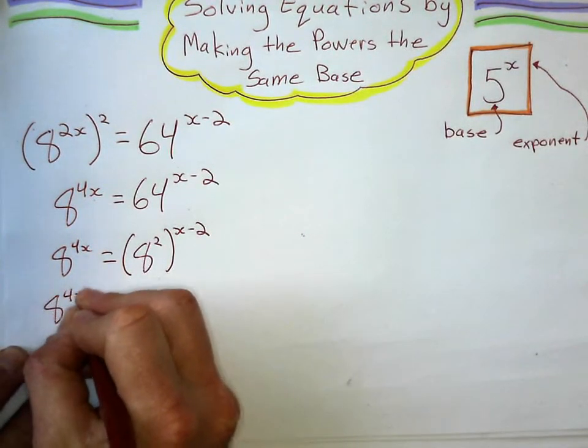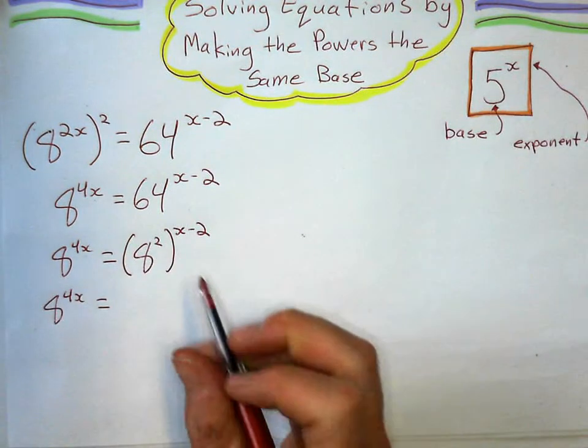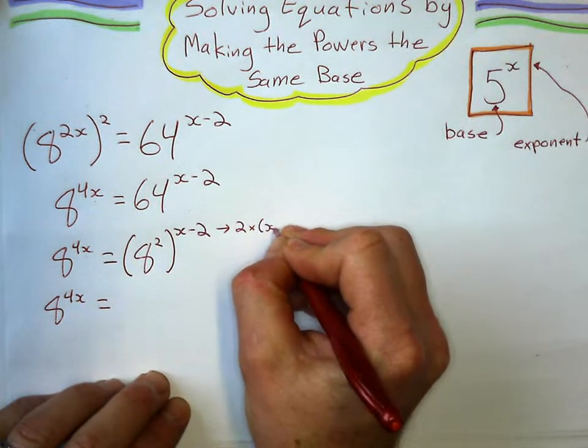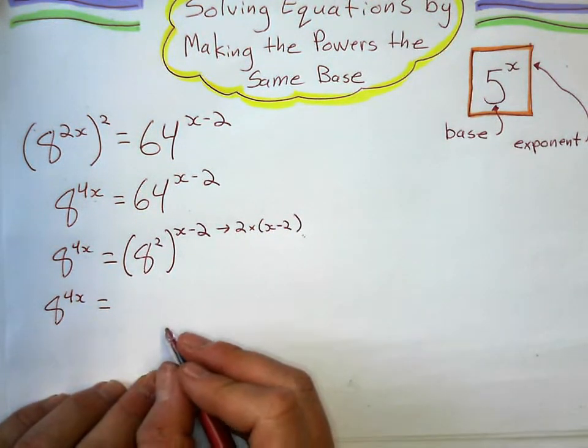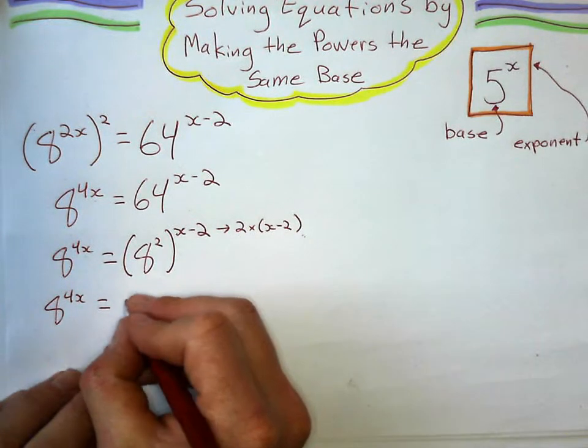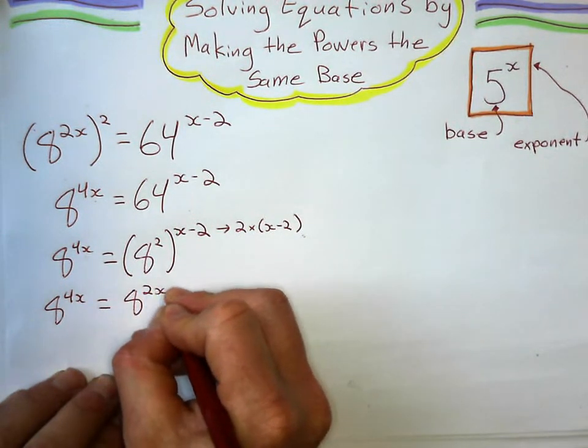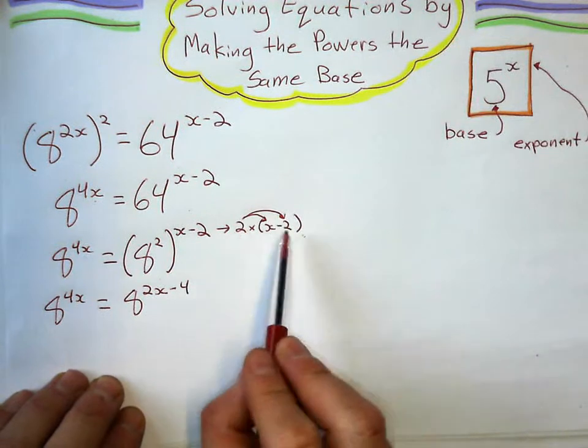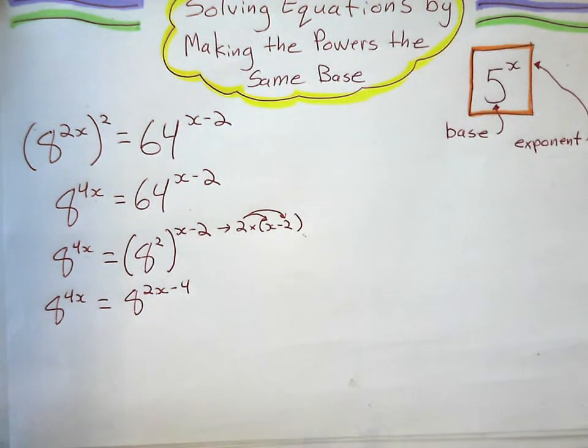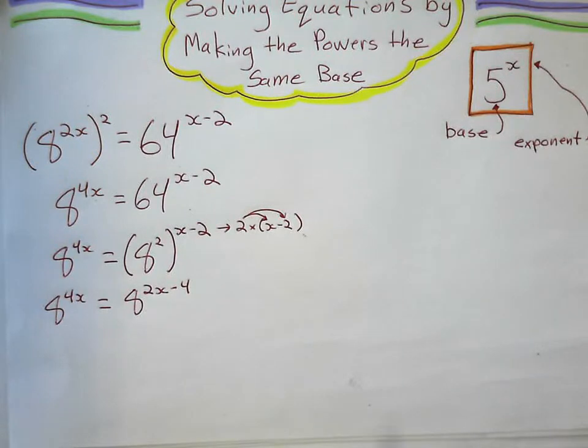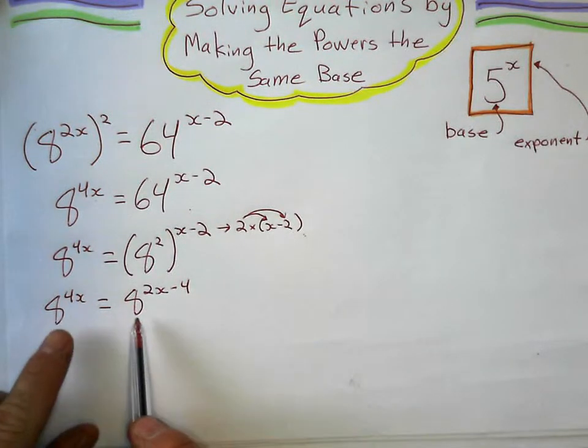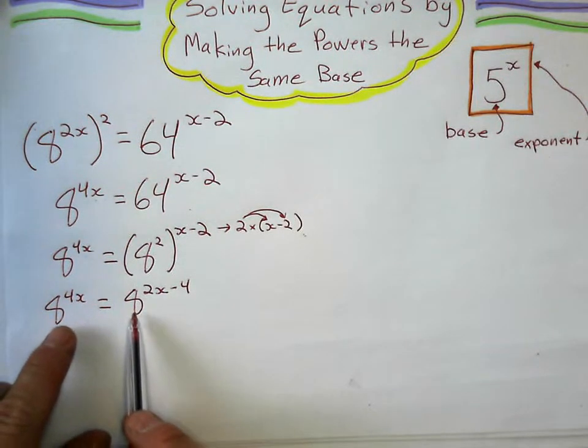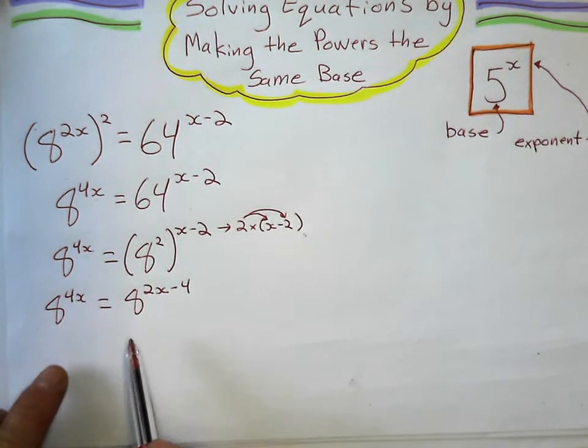Now I do my power to a power rule, and a power to a power gets multiplied. So this is 2 times x minus 2, which makes it 2x minus 4. That's what happens when I multiply that 2 through. So the beauty of this, now that I've got two powers with the same base that are equal to each other, that must mean that their exponents are equal to each other.